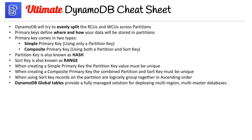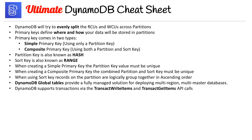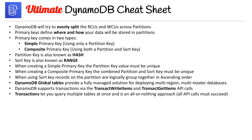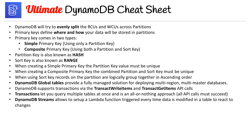DynamoDB global tables provide a fully managed solution for deploying multi-region, multi-master databases. DynamoDB supports transactions via the TransactWriteItems and TransactGetItems API calls. Transactions let you query multiple tables at once in an all-or-nothing approach — all API calls must succeed. DynamoDB streams allow you to set up a Lambda function triggered every time data is modified in a table to react to changes. Streams do not consume RCUs, which is a nice benefit.